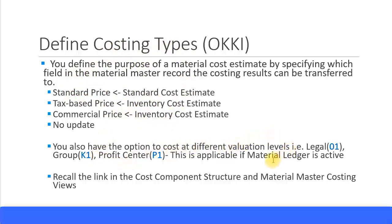You also have the option to cost at different valuation levels. This is related to the material ledger. If you have the material ledger active, there are three types of valuation levels you can use: legal level, group level, and profit center level. If those are active in the material ledger, you have the option to cost at different valuation levels as well.